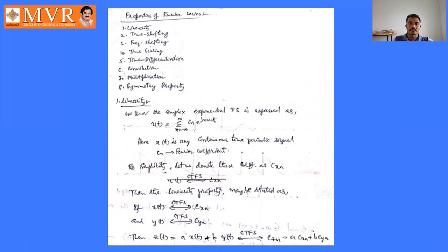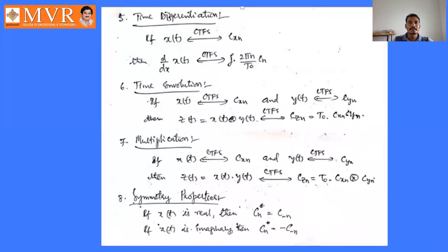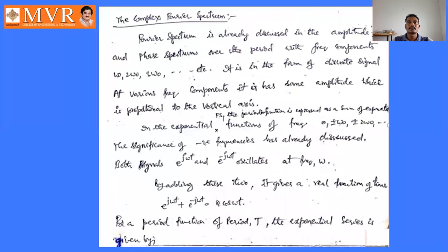Now coming to the complex Fourier spectrum, as we already discussed: we have an amplitude spectrum and a phase spectrum over the period with frequency components ω₀, ±ω₀, ±2ω₀, ±3ω₀, up to ±nω₀. It is in the form of a discrete signal. At various frequency components it has some amplitude, which is proportional to the vertical axis in either the frequency spectrum or phase spectrum.